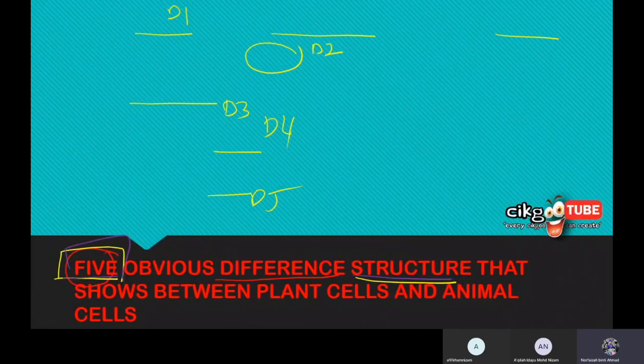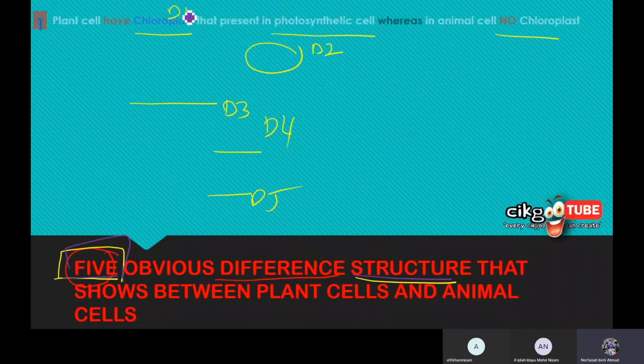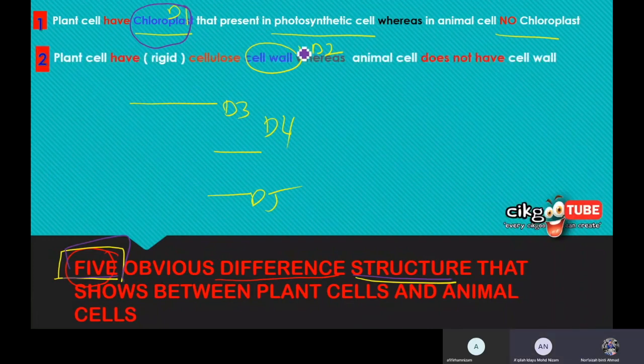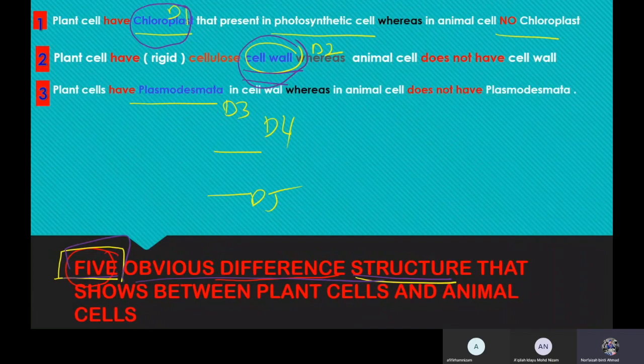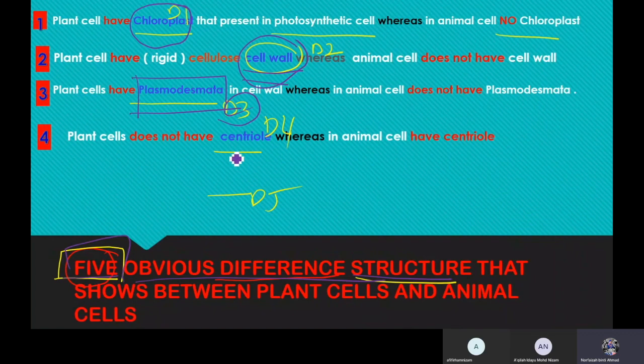The first one, like teacher mentioned just now, is chloroplast. The next one, number two, is the cell wall. This is the obvious structure. Number three, the difference that we can detect is plasmodesmata. Next, in animal cell we can see the centriole.